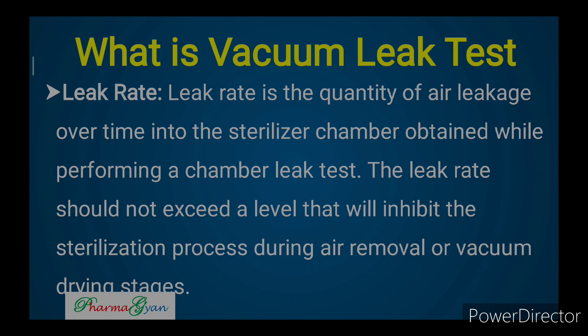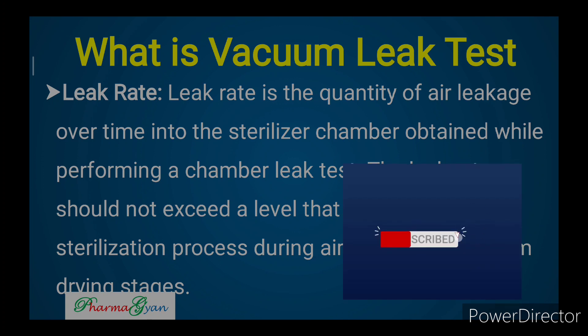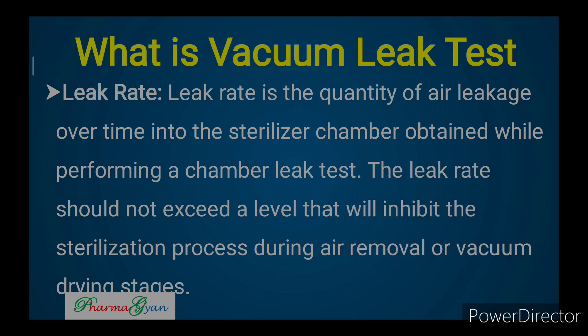Leak rate is the quantity of air leakage over time into the sterilizer chamber, obtained while performing a chamber leak test. The leak rate should not exceed a level that will inhibit the sterilization process during air removal or vacuum drying stages. It is a pre-determined quantity — for example, leakage should not be more than a defined value per minute or per 10 minutes. The defined limits and acceptance criteria will be discussed further in the video.